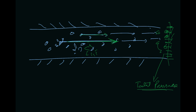The total pressure includes the pressure exerted due to this mass movement as well as this random movement. This random movement pressure was basically static pressure, and static pressure plus the pressure due to this mass movement is known as total pressure.